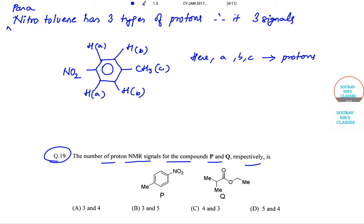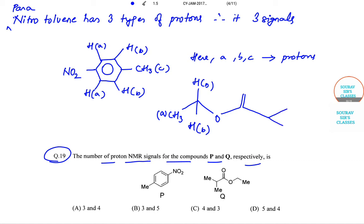Now let me draw another diagram. So it looks something like this: we have O, hydrogen marked as B, hydrogen again marked as B, CH3, then H, H marked as C, CH3 marked as D, CH3 again marked as D, and then O.